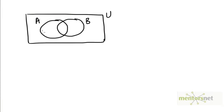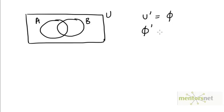Now let's look at a Venn diagram which has two sets A and B. What would be the complement of U? The complement of the universal set would be all the elements that are not in the universal set. But because everything is in the universal set, U complement would be the empty set phi. Phi complement would be the set of elements that are not in the empty set, which would basically be all the elements that there are. So this would just be the set U.